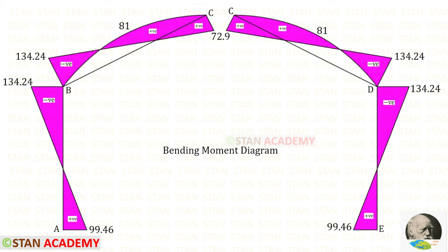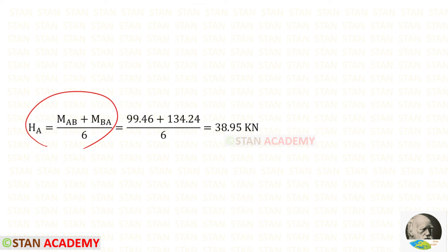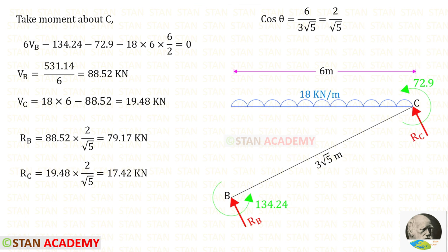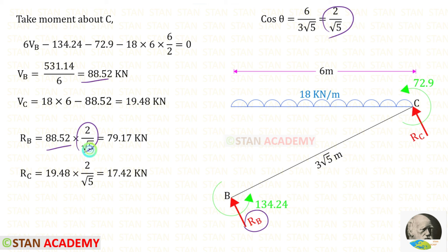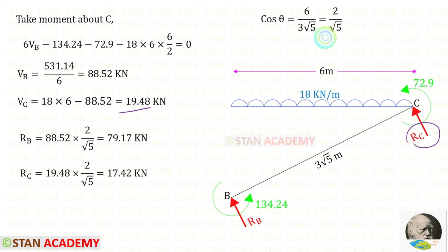Here you can see the bending moment diagram drawn by the superposition method. Using the expression derived earlier, we can find the horizontal reaction H_A. Now, taking member BC, we find the reactions R_B and R_C. First we find vertical reactions V_B and V_C by taking moments about C, then to find R_B we multiply V_B by cos theta, giving 17.42 kN.